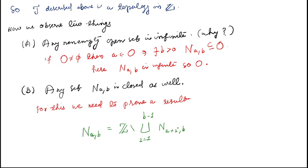We observe two important things. First: any non-empty open set is infinite. If O is not empty, then some a belongs to O, which implies there is B > 0 such that N(a,b) ⊆ O. Since B is positive and n varies over all of Z, N(a,b) is an infinite set. A set containing an infinite set is infinite, so O is infinite. Any non-empty open set is infinite.